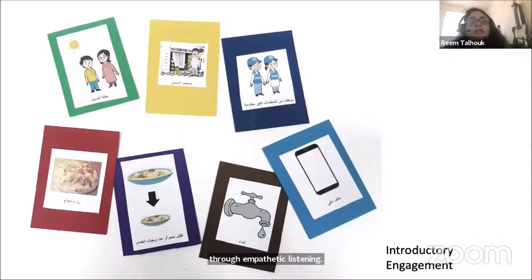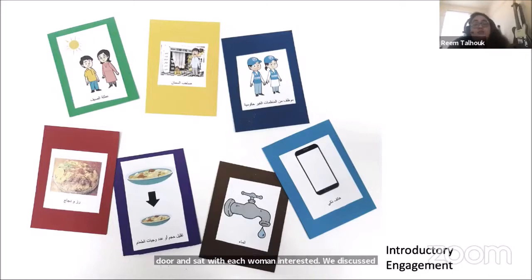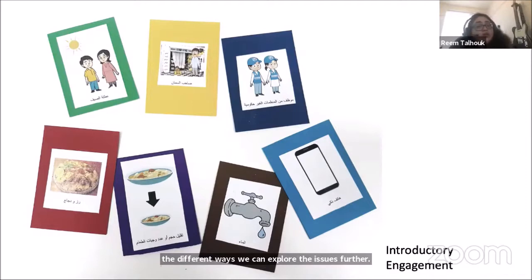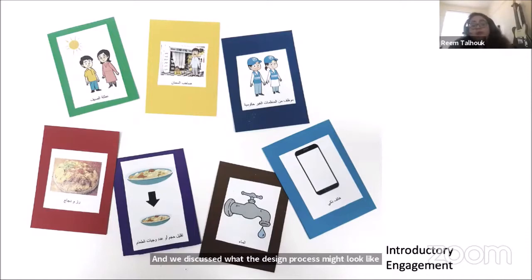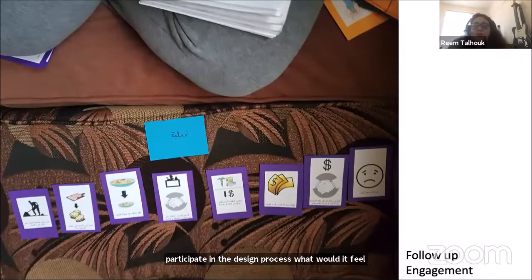Looking at the food security case study: when I first went to the community I knocked on every door and sat with each interested woman. We discussed the issue of food security and I showed them all the different ways we could explore the issues further — essentially the design methods we could potentially use — and we discussed what the design process might look like as a whole. Refugee women wanted time to reflect on it and understand what it means to participate in a design process and what it would feel like.